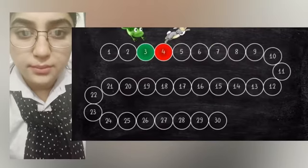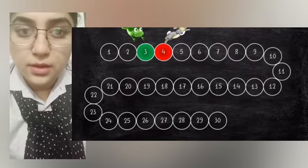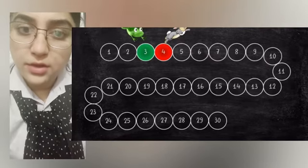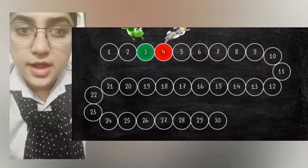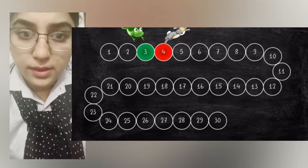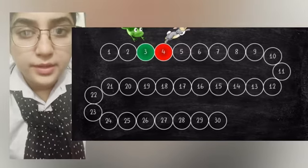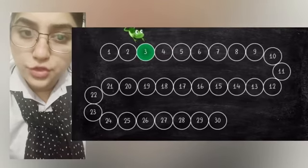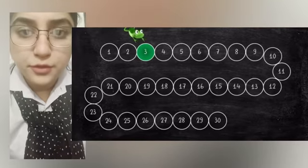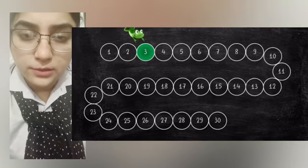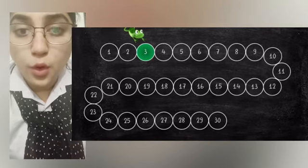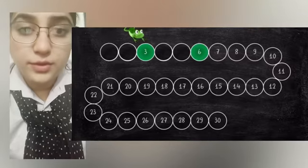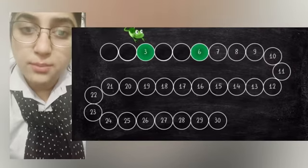Let's take an example to understand multiples. A frog is jumping three steps at a time and a rabbit is jumping four steps at a time. Let's find the numbers on which the frog and rabbit will jump. The frog will first jump on three, then it will jump on six, then again it will take three steps and jump.